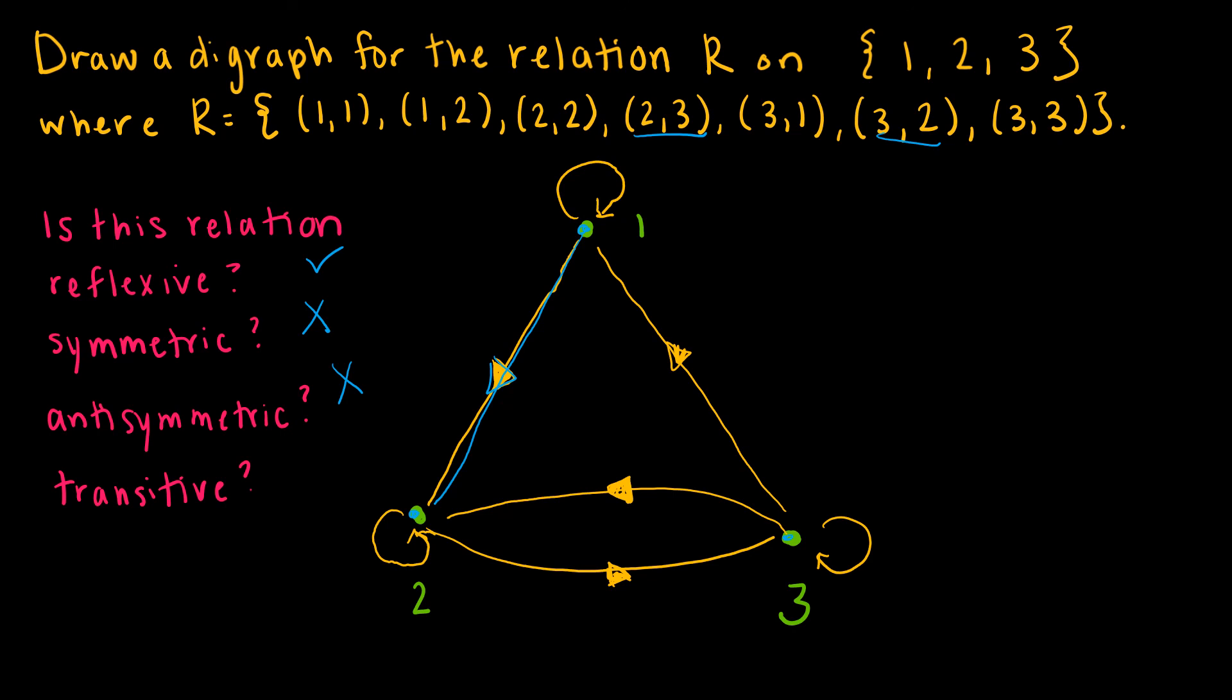And finally, is it transitive? Remember, transitive says that, let's say, 1 maps to 1 and 1 maps to 2, then 2 must map to 1, and obviously it's not that either. 2, 3 is here.